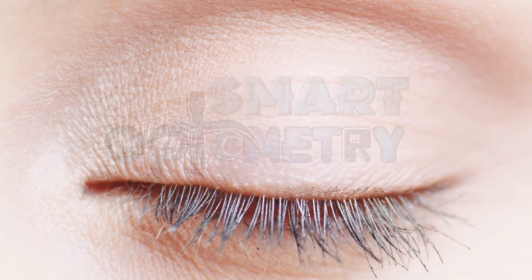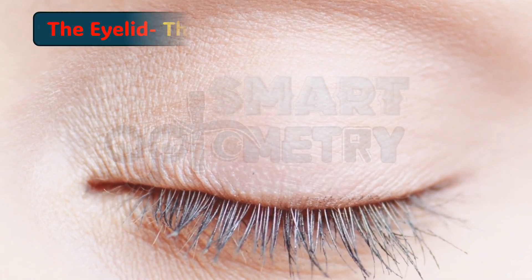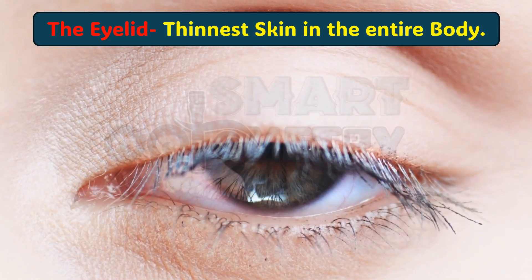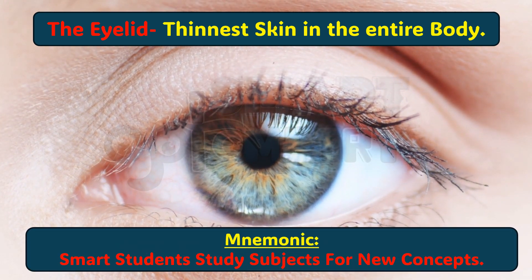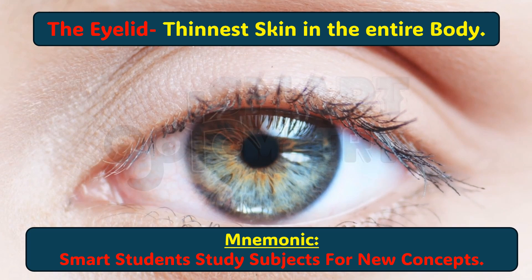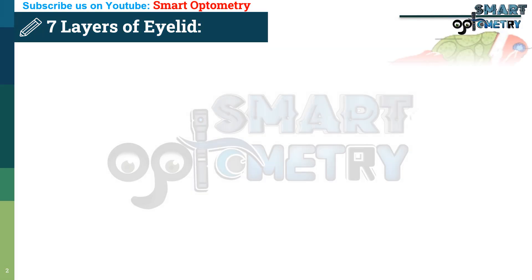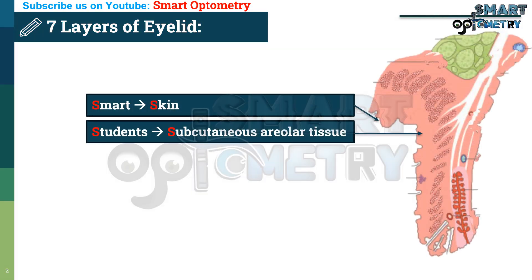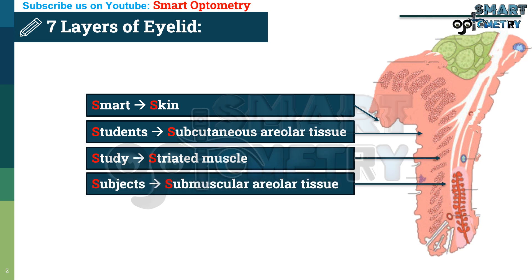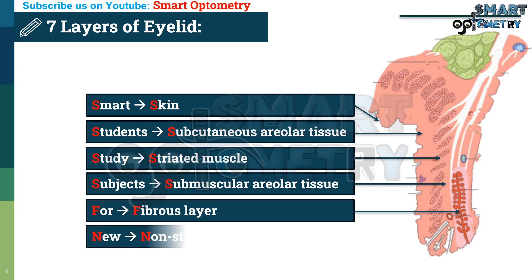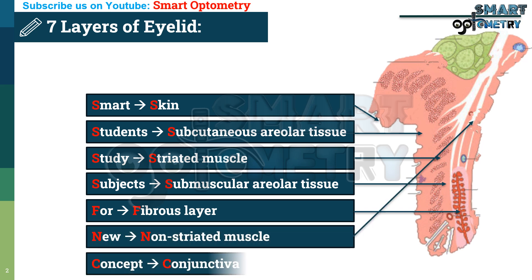Did you know that the skin on our eyelids is the thinnest in the entire body? The eyelid has 7 layers, and you can easily remember those layers by the mnemonic: 'Smart students study subjects for new concepts' — standing for Skin, Subcutaneous areolar tissue, Striated muscle, Submuscular areolar tissue, Fibrous layer, Non-striated muscle, and Conjunctiva.